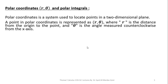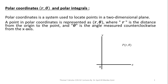So first of all, what is a polar coordinate system? A polar coordinate system is a system which is used to locate a point in a two-dimensional plane. A point in polar coordinates is represented by R and theta, where R is the distance of the point from the origin, and theta is the angle measured in counterclockwise direction with the positive x-axis. Here in this diagram, if P is a point whose coordinates are R and theta, then its distance from the origin will give you the value of R, and the angle measured in counterclockwise direction will give you the value of theta. So these are the polar coordinates.